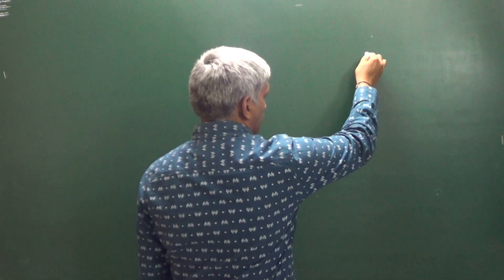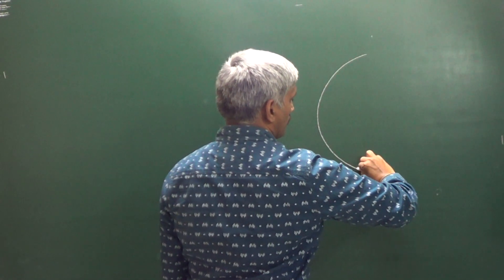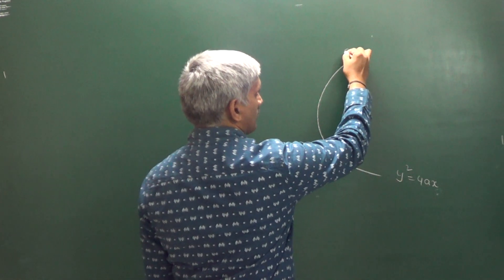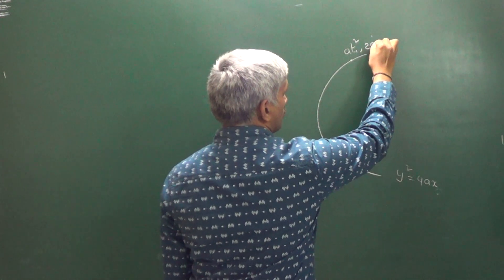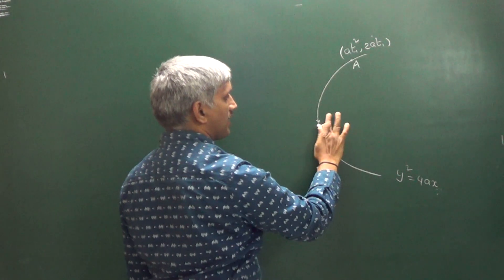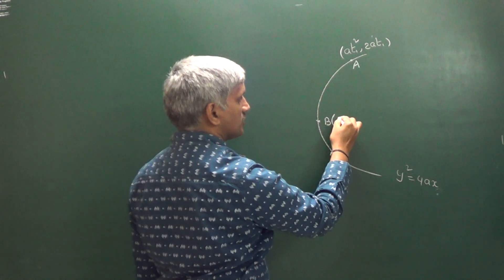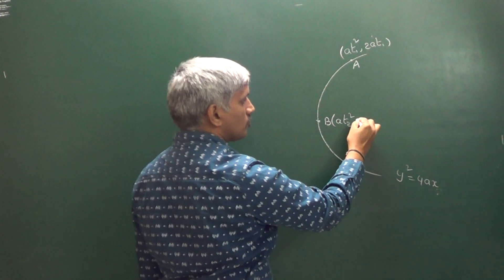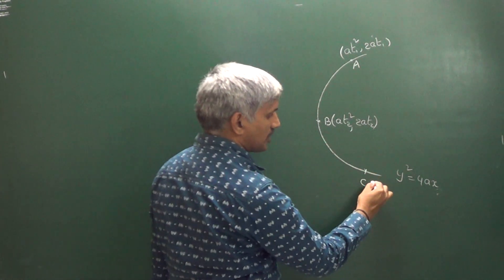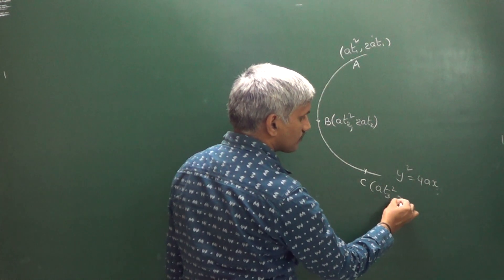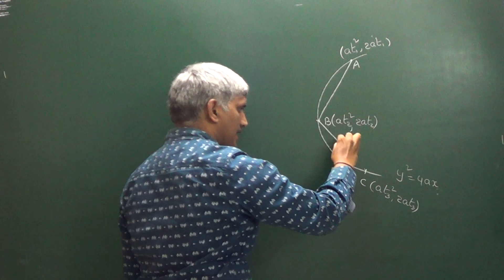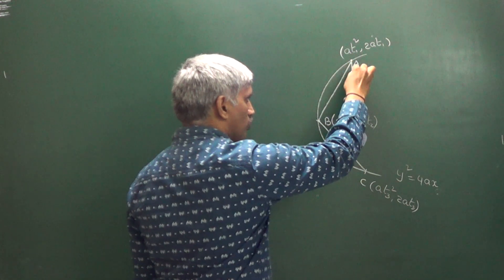So this is a standard parabola, y² = 4ax. Here we have a point t₁, let us say that is A = (at₁², 2at₁). Here there is another point B = (at₂², 2at₂), that is the second point on the parabola. And this is the third point C = (at₃², 2at₃). With the help of these three points, we are getting a triangle. I am asking, what about the area of this triangle?